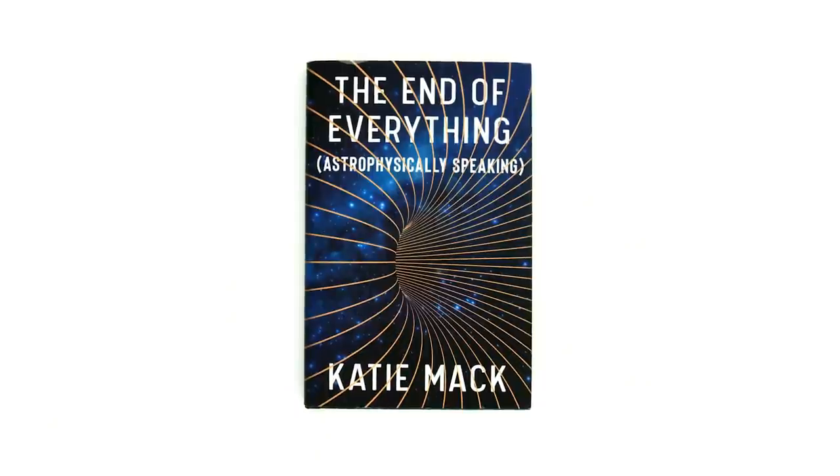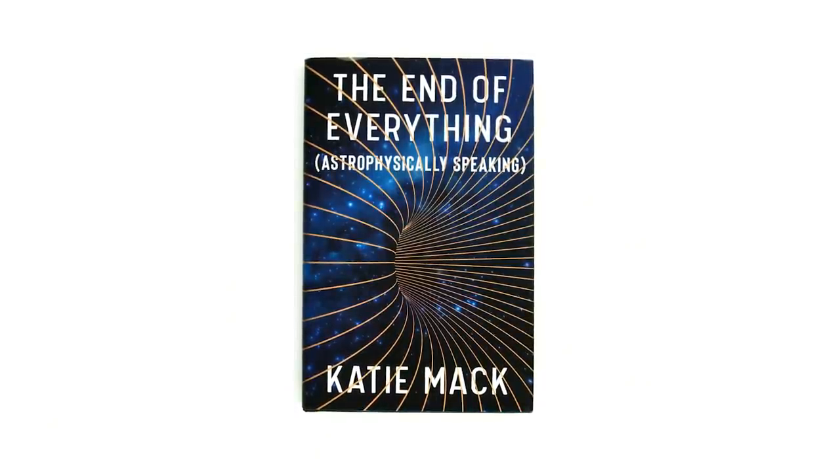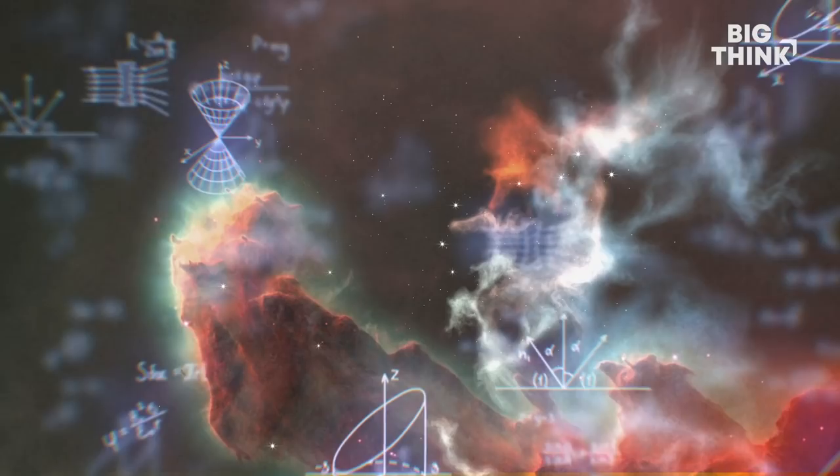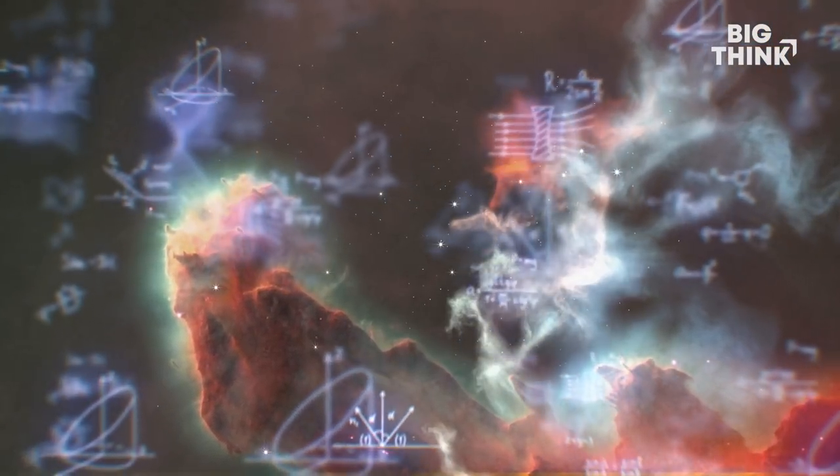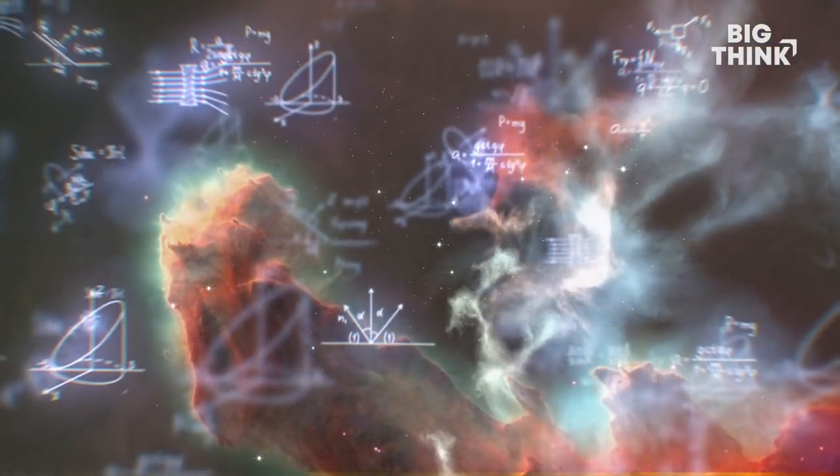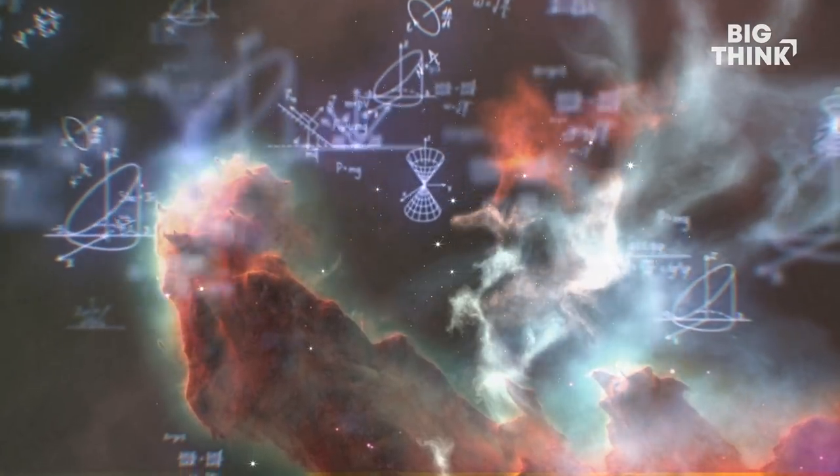My name is Katie Mack. I'm an assistant professor of physics at North Carolina State University, and my book is called The End of Everything Astrophysically Speaking. I thought it would be fun to talk about the far future of the universe. I find the fact that you can write down an equation and tweak a term and then the universe is destroyed, I find that delightful.